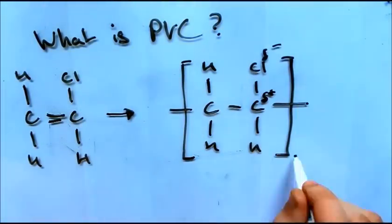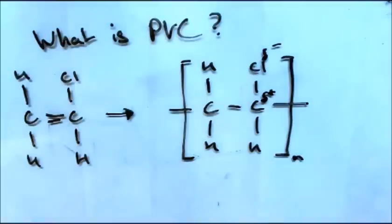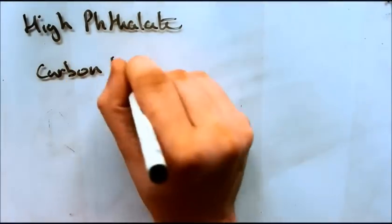PVC is polyvinyl chloride, a polymer made from vinyl chloride, a halogen alkene. PVC is very cheap to manufacture and is able to be applied to a range of products with very different properties with phthalate plasticizers.